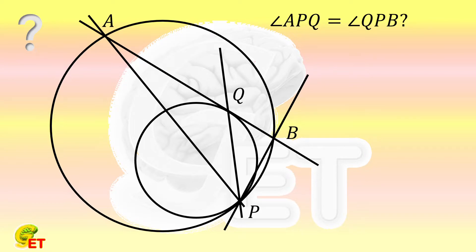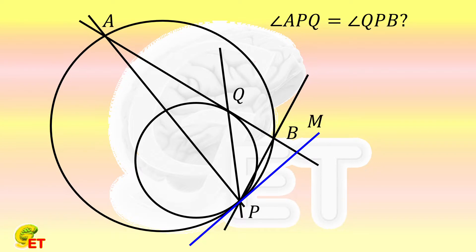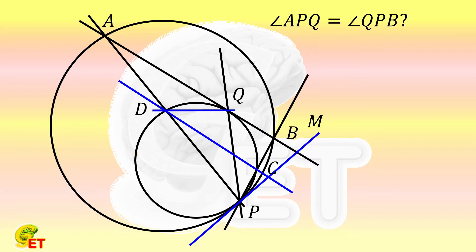Let's first plot several auxiliary lines. As we have mentioned before, whenever we are facing this kind of problem where two circles are tangent to each other, no matter whether it is useful or not, let's first plot the common tangent line of these two circles. We call this common tangent line PM. Then we connect point C, which is the intersection of PB with the small circle, and point D, which is the intersection of PA with the small circle. Finally, we connect QD. The auxiliary lines are now ready.